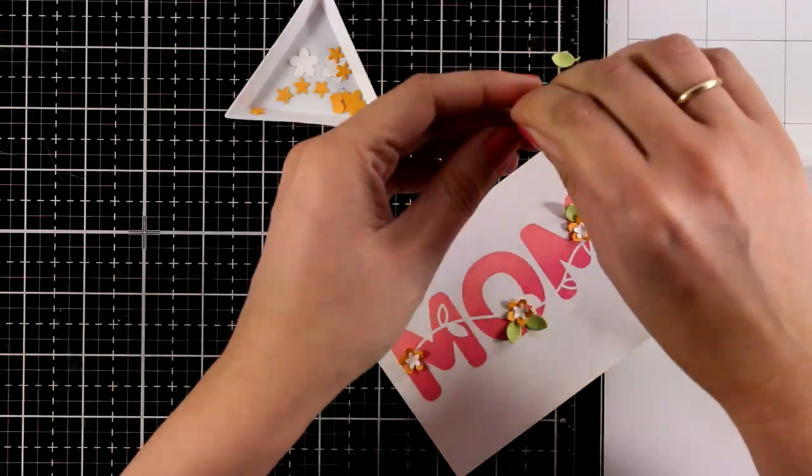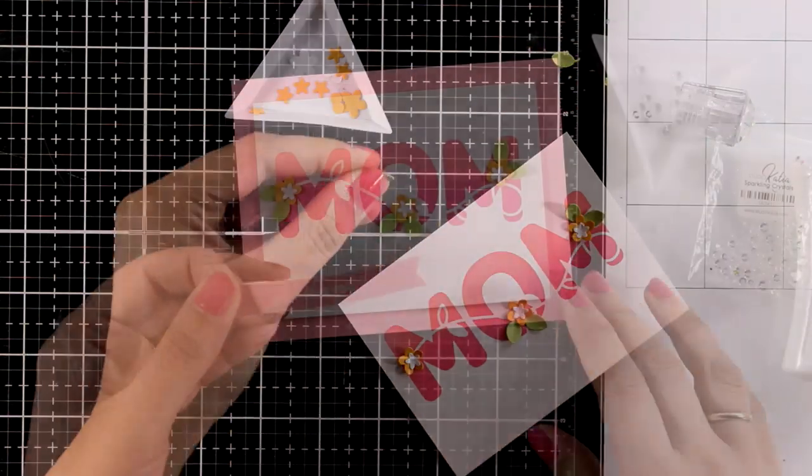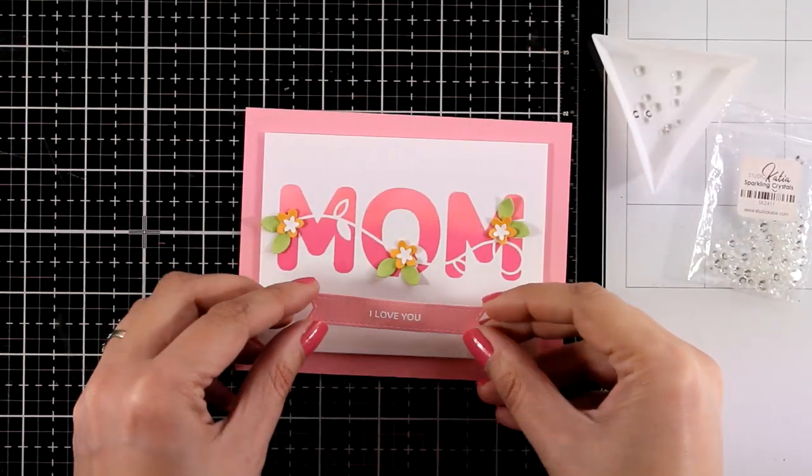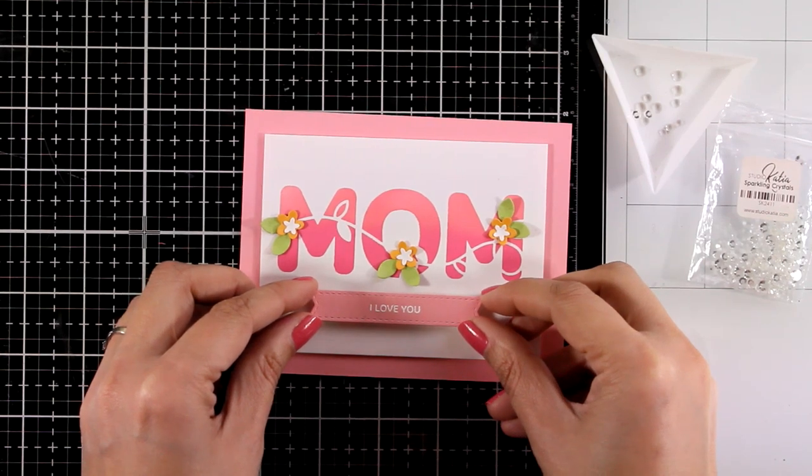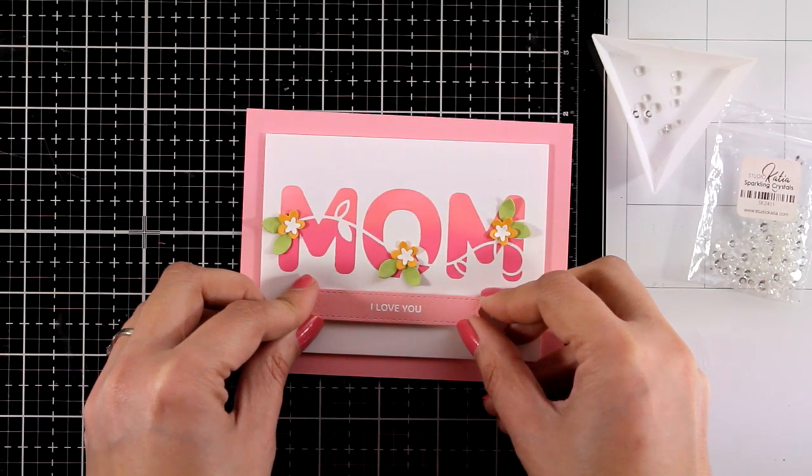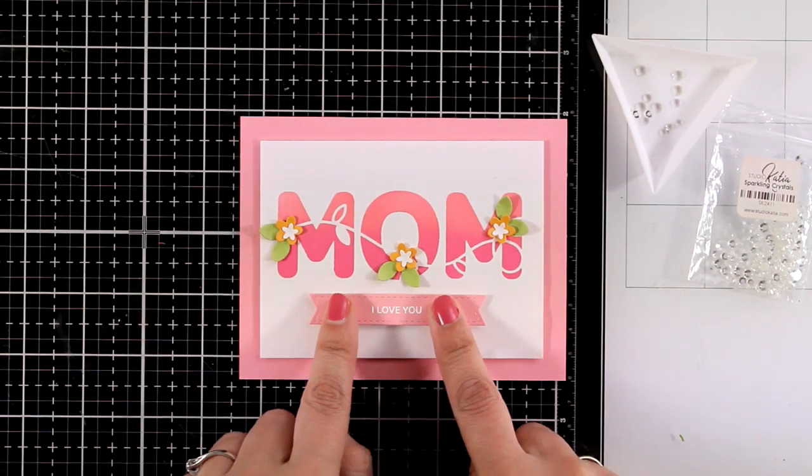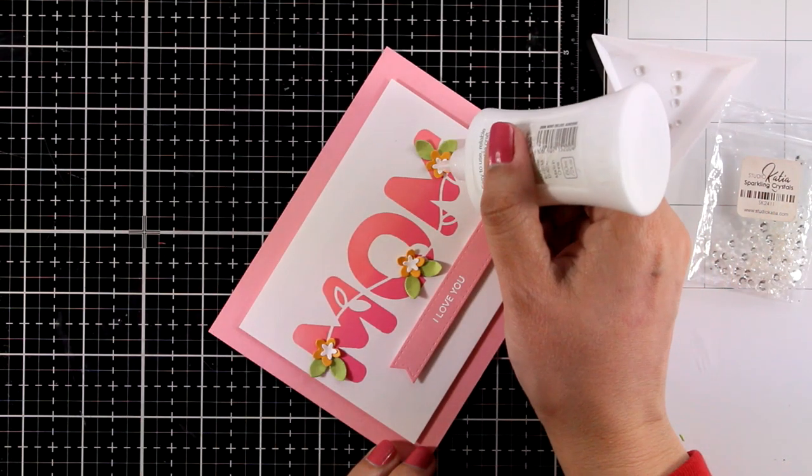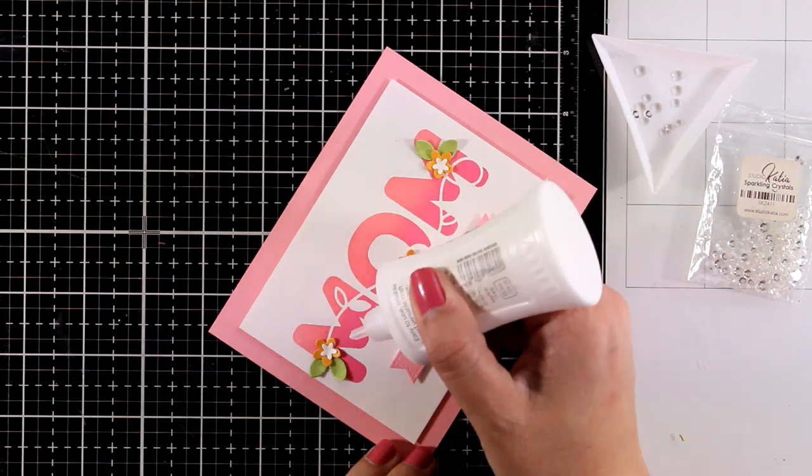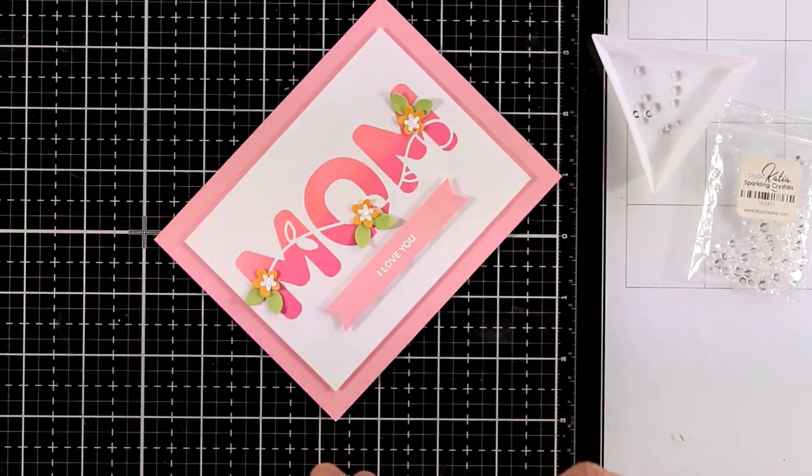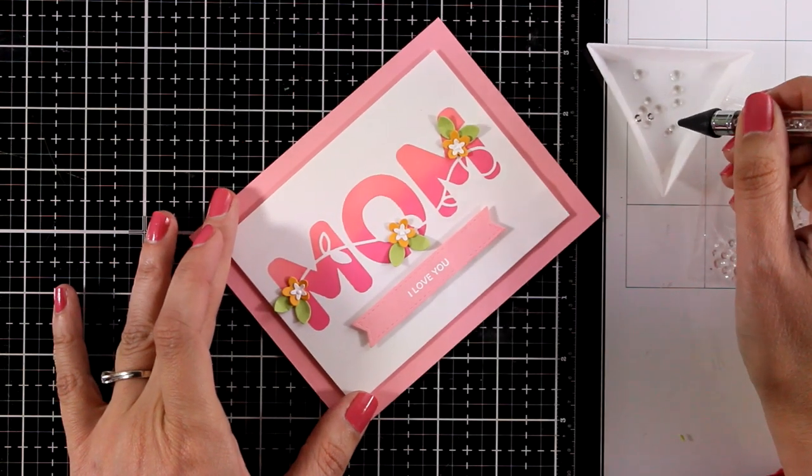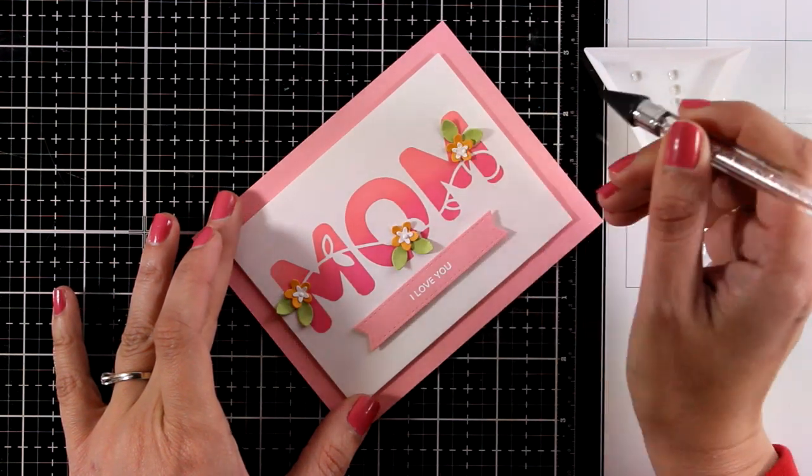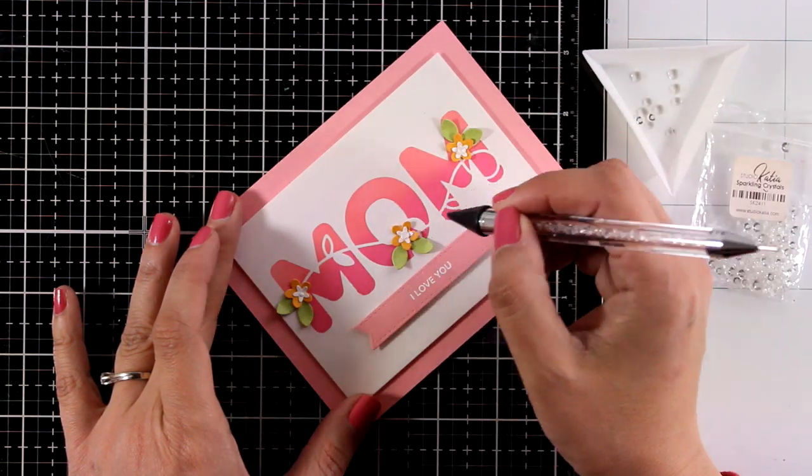I think it makes my cards look more special. For my sentiment, I went with 'I Love You,' which I have white embossed on a piece of pink cardstock and die-cut with one of those banner dies. My card base is made out of this pink cardstock. Now I'm going to finish it off by adding three crystal gems at the center of my flowers just to add some extra bling. It's a design that's super easy to recreate.